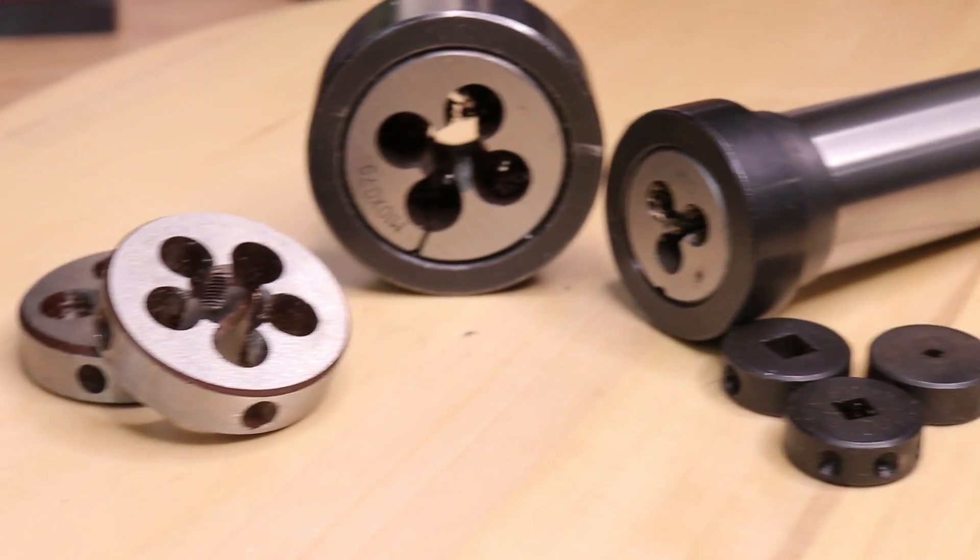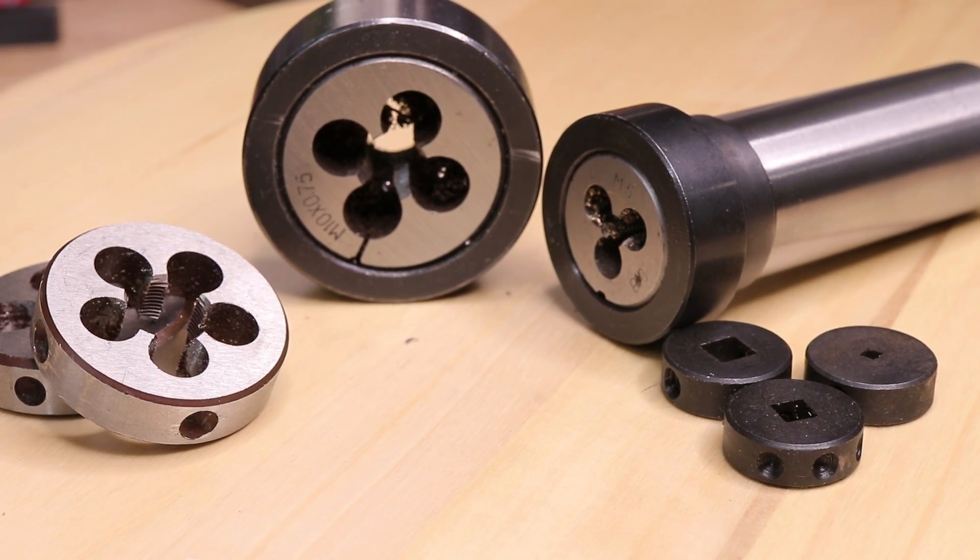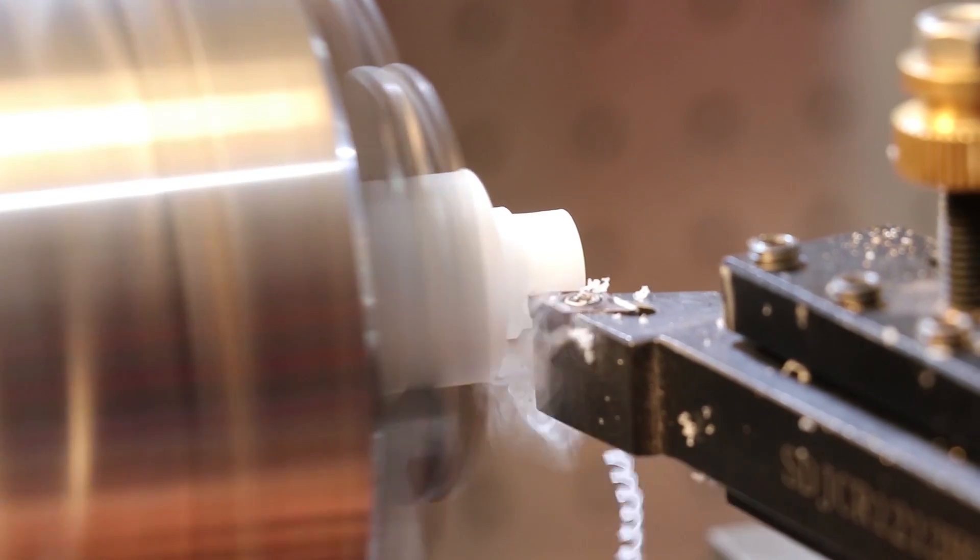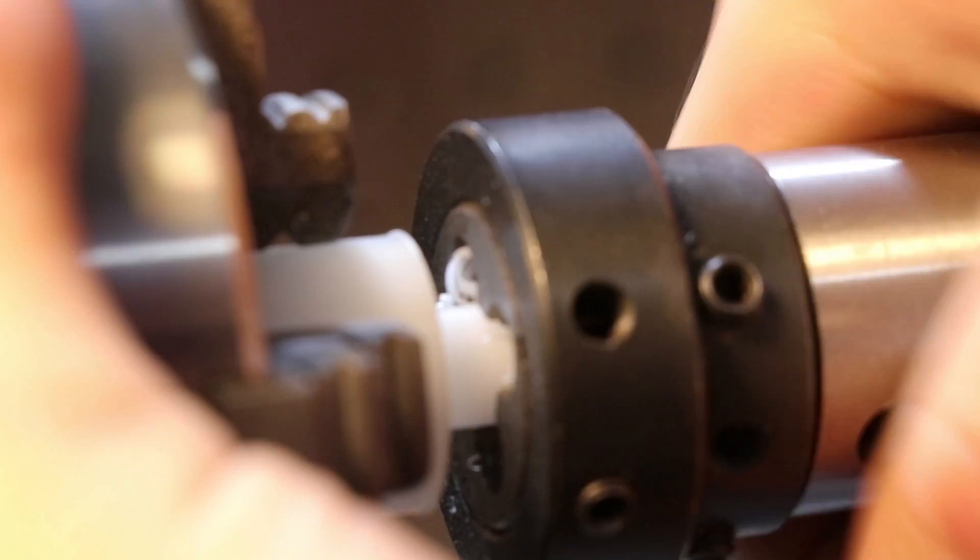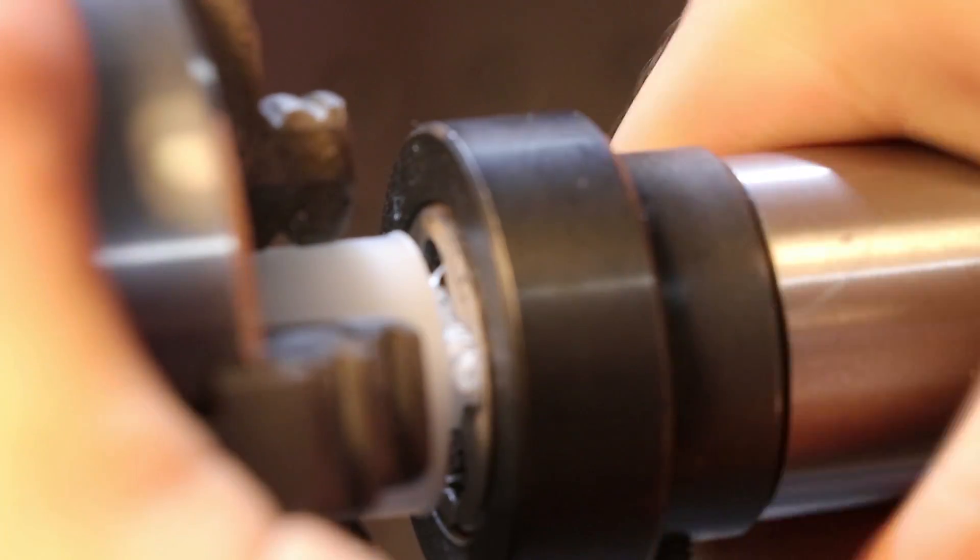Now one thing that I'm not sure that I'd buy again is the tailstock die holder. I had to make parts that required a lot of cut threads and to save time I bought this die holder. From memory it was really overpriced at about $80 to $90. It works really well but I think I could have made my own for a fraction of what I paid.